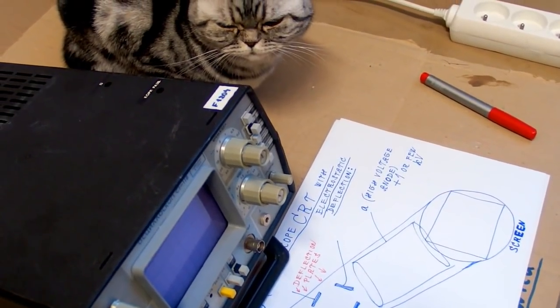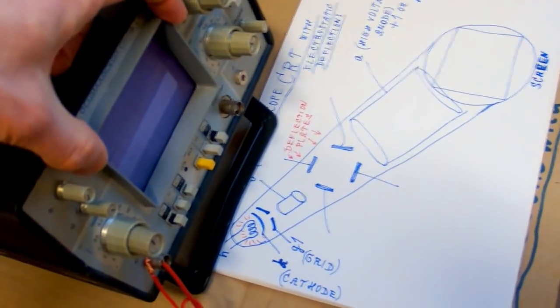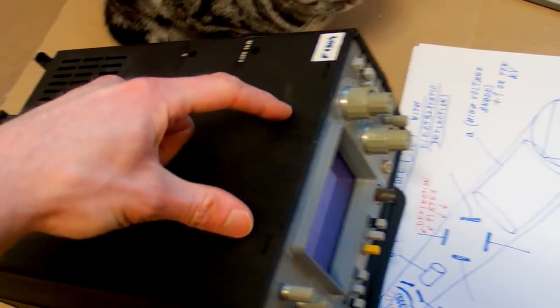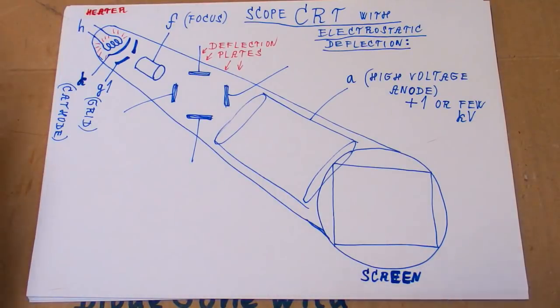The problem of the electrostatic deflection is a very low deflection angle. So the tube has to be very long. As you can see it's quite narrow here, but it's very long and it goes to the very back of the oscilloscope. But a CRT in an oscilloscope has to be electrostatic to be able to measure high frequency signals.